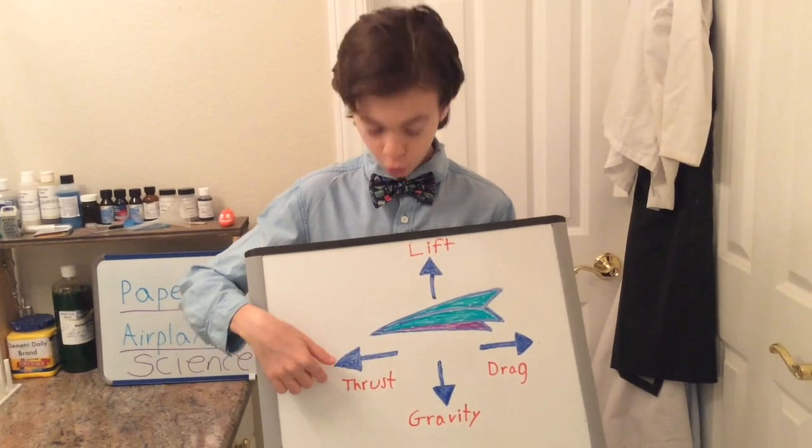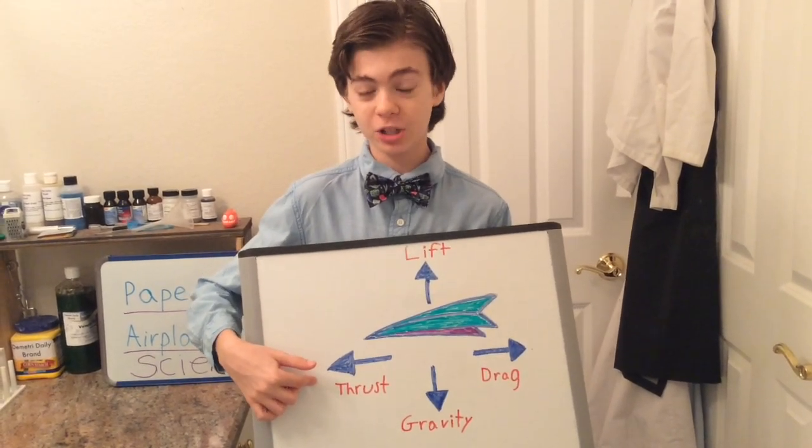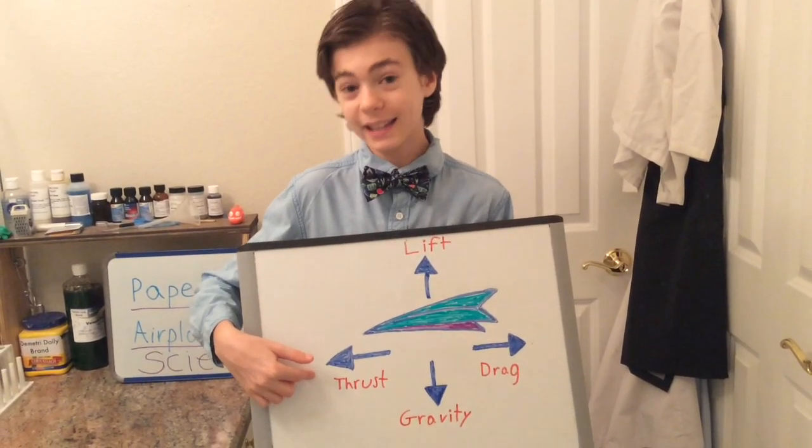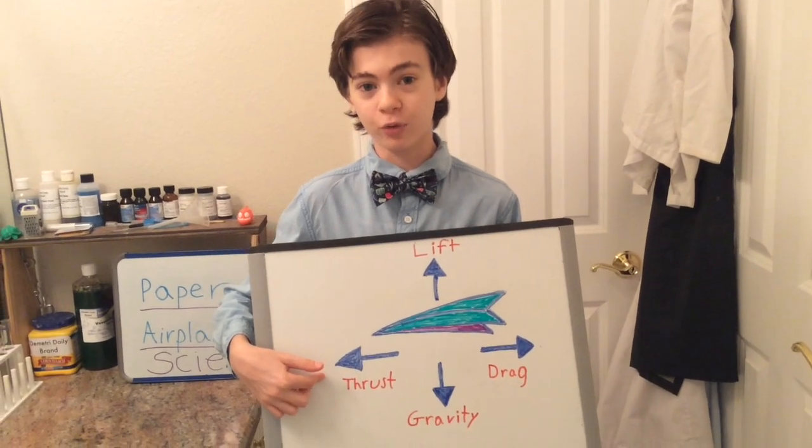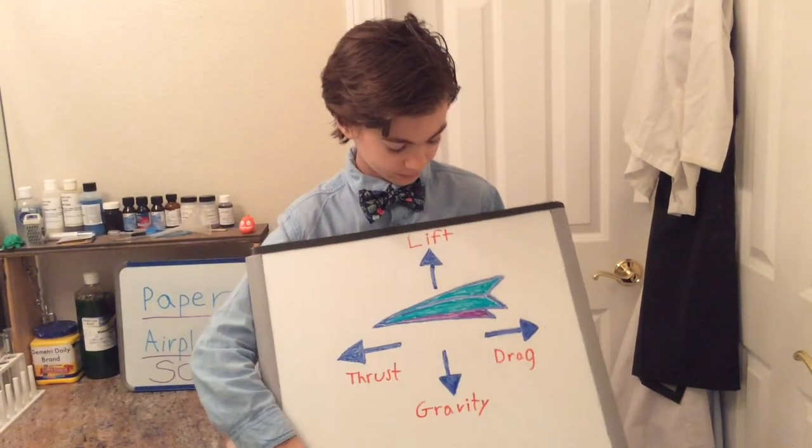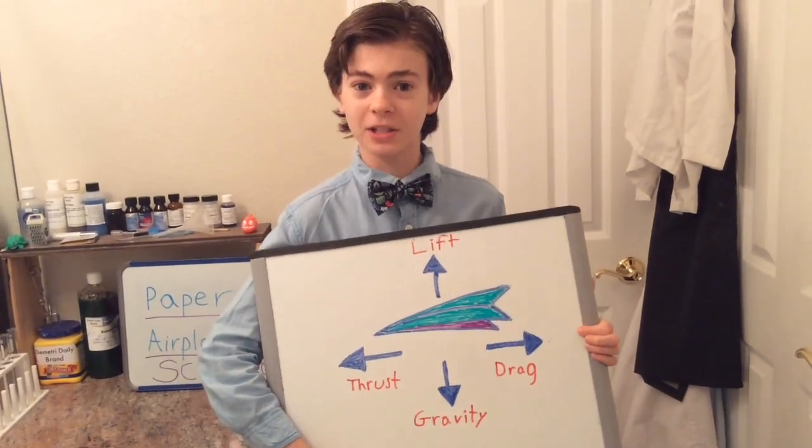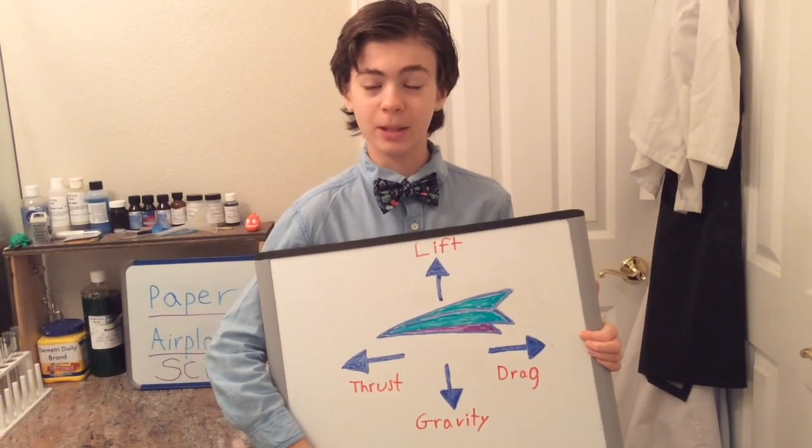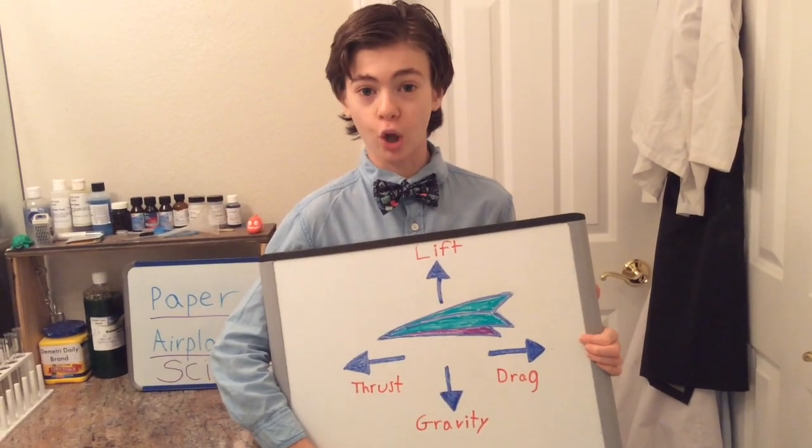Here you have thrust, which is the force that propels the paper airplane forward. In the case of a paper airplane, it comes from your hand. And here's drag, which is the opposite of thrust. It's friction between the plane and the air, which slows the plane down.